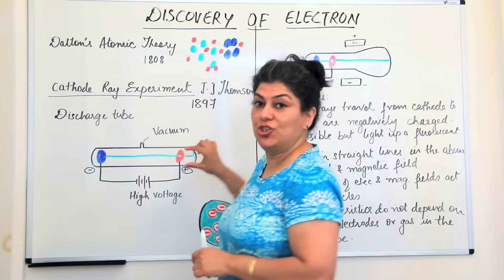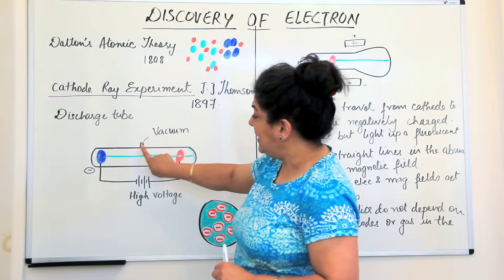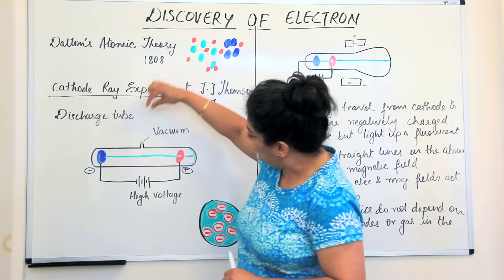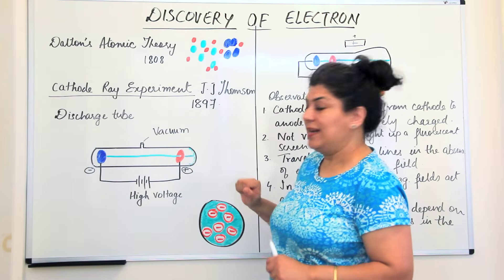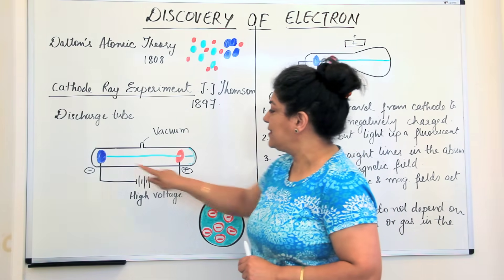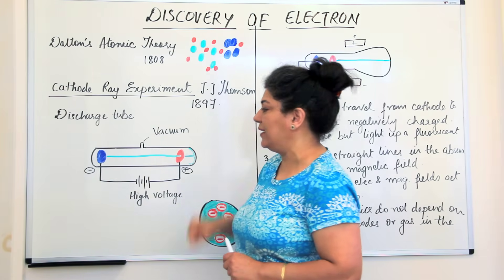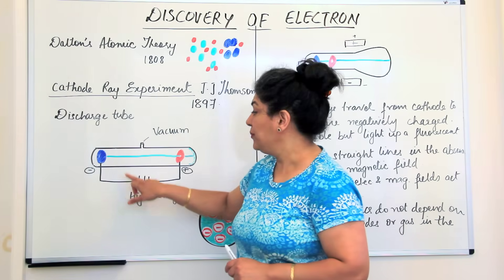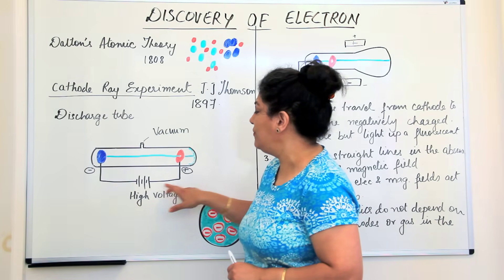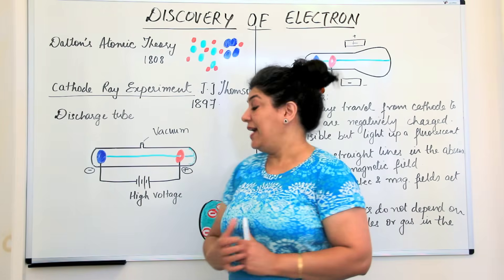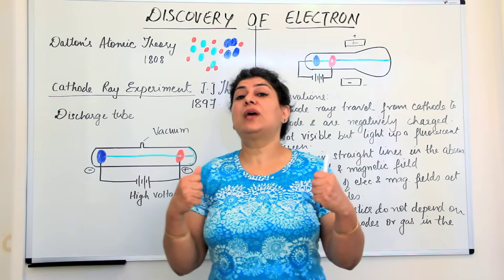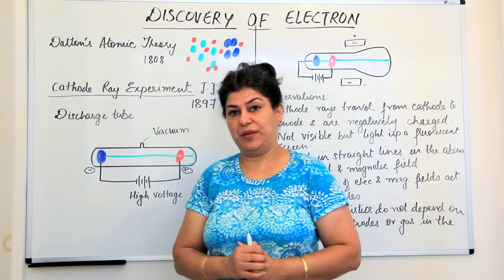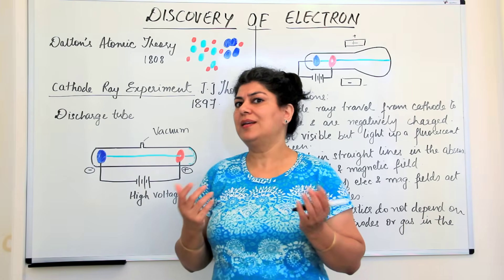In the same way, he used this discharge tube which was like a tube light, and it had an opening connected to a vacuum pump. He took a gas like hydrogen inside it. The two electrodes were called the cathode, connected to the negative terminal of the battery, and the anode, the positively charged electrode. When he passed electric current through the hydrogen at one atmospheric pressure, he noticed nothing happened.